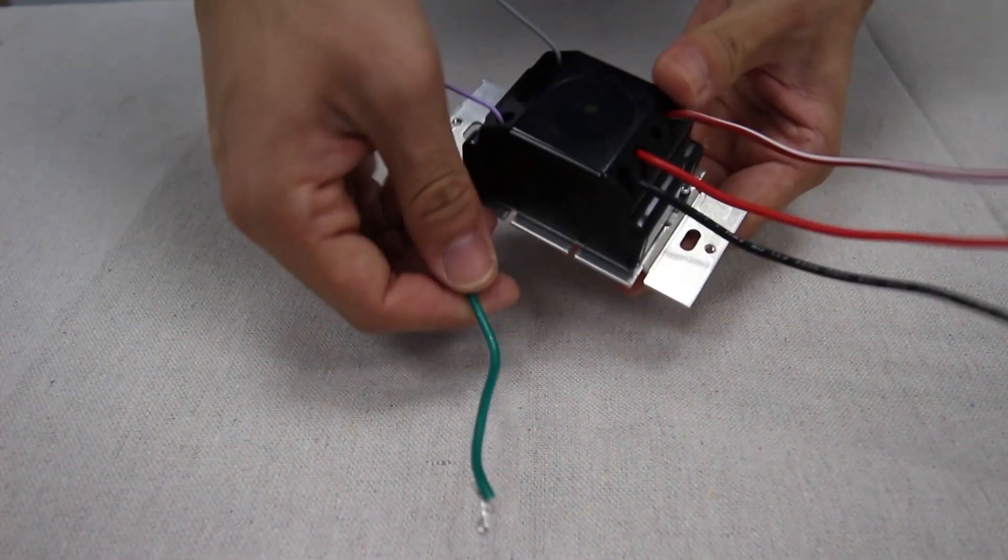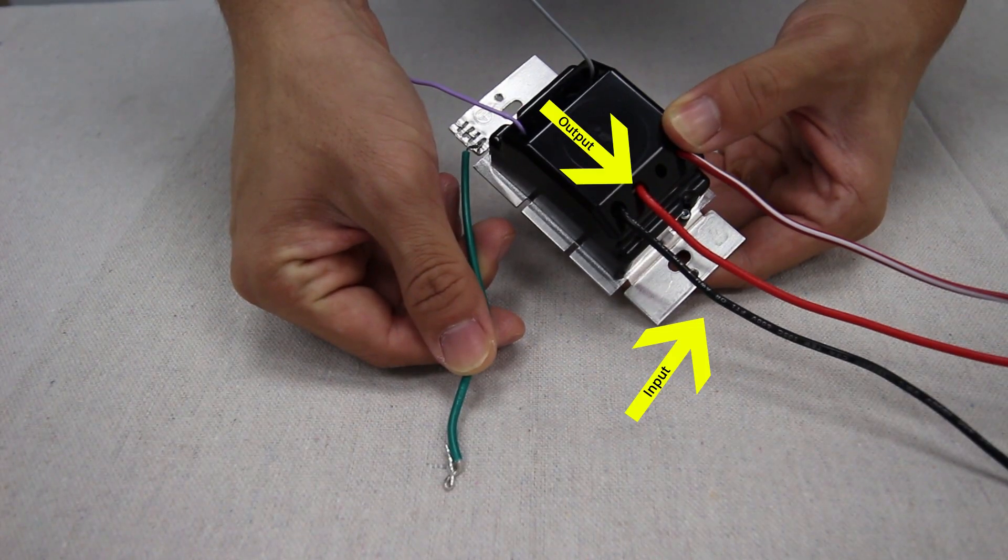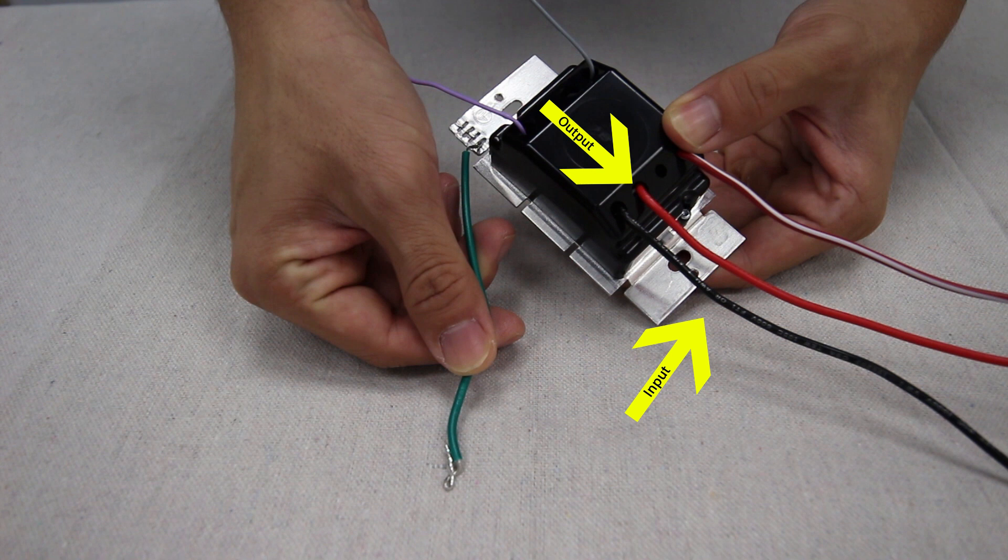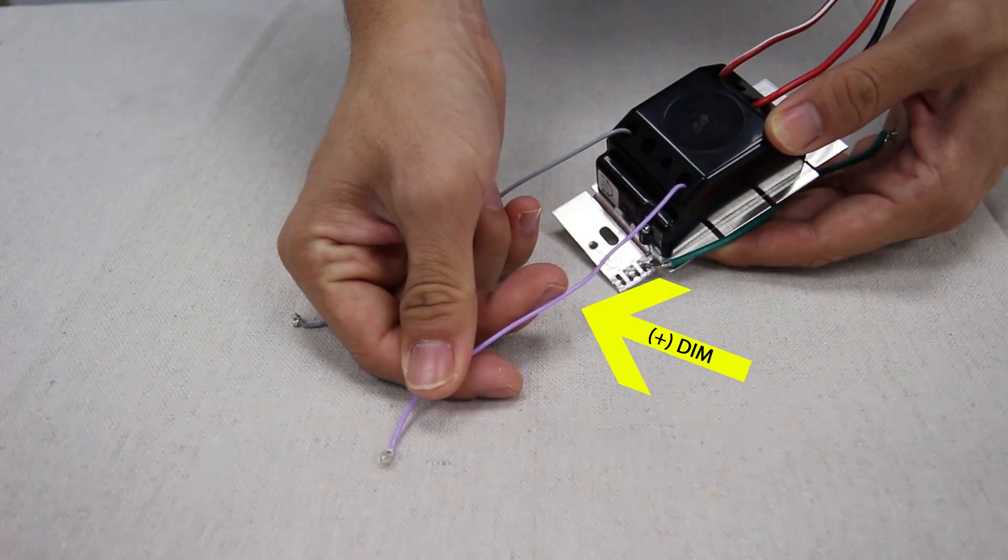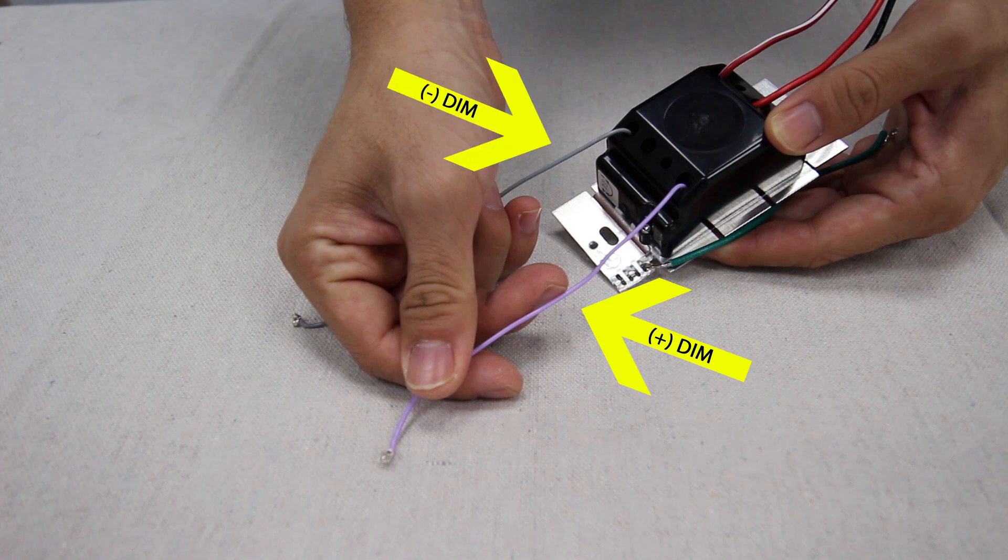The black wire is the input for the live end. The red wire is the output for the live end. This red-white wire is used for three-way switches which we won't be using. The green wire is the ground wire. And finally, the violet wire is the positive dimming wire while the gray is the negative dimming wire.